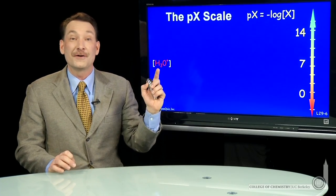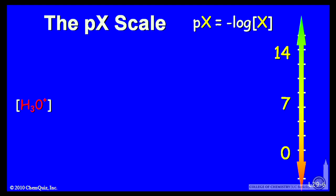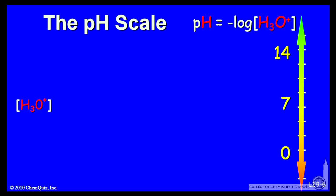So if we're talking about H3O+, the acid form in water, then pH, which is abbreviation for H3O+, is minus log of H3O+.